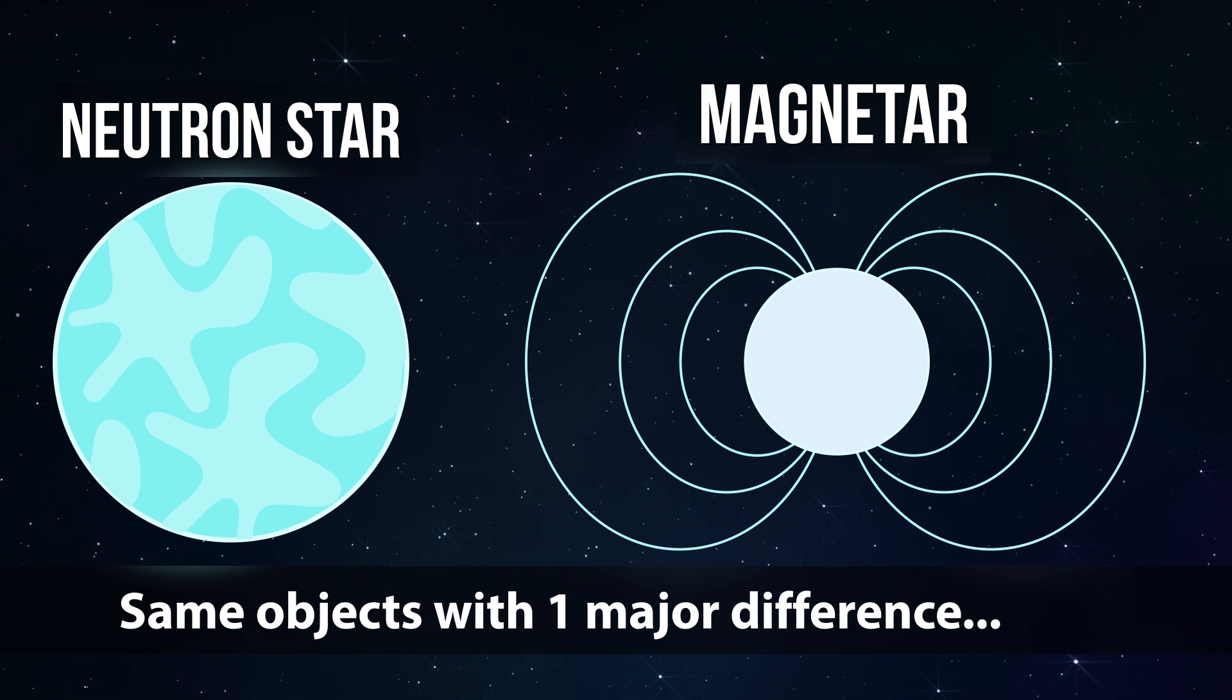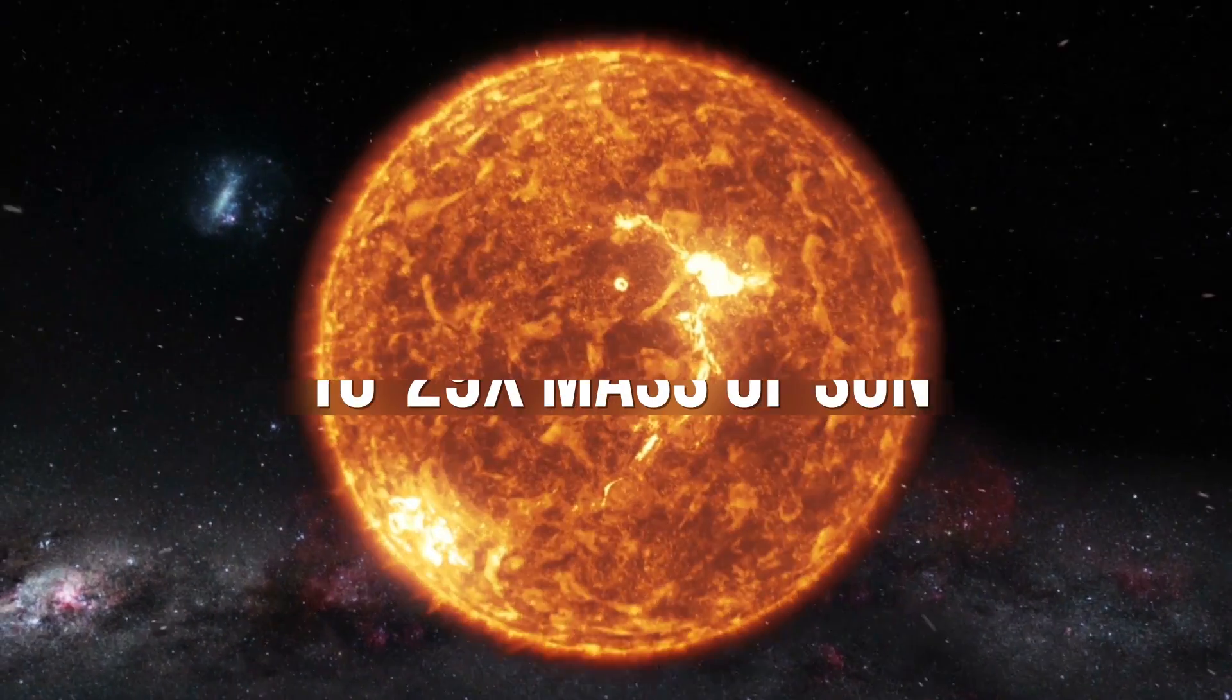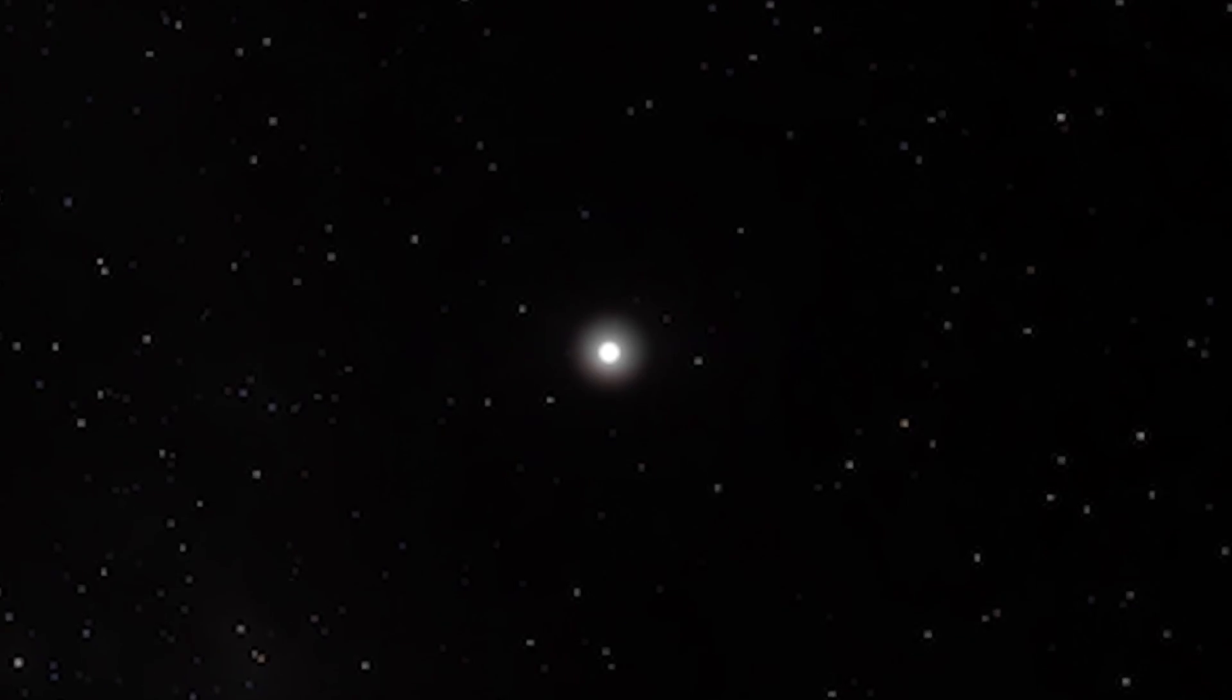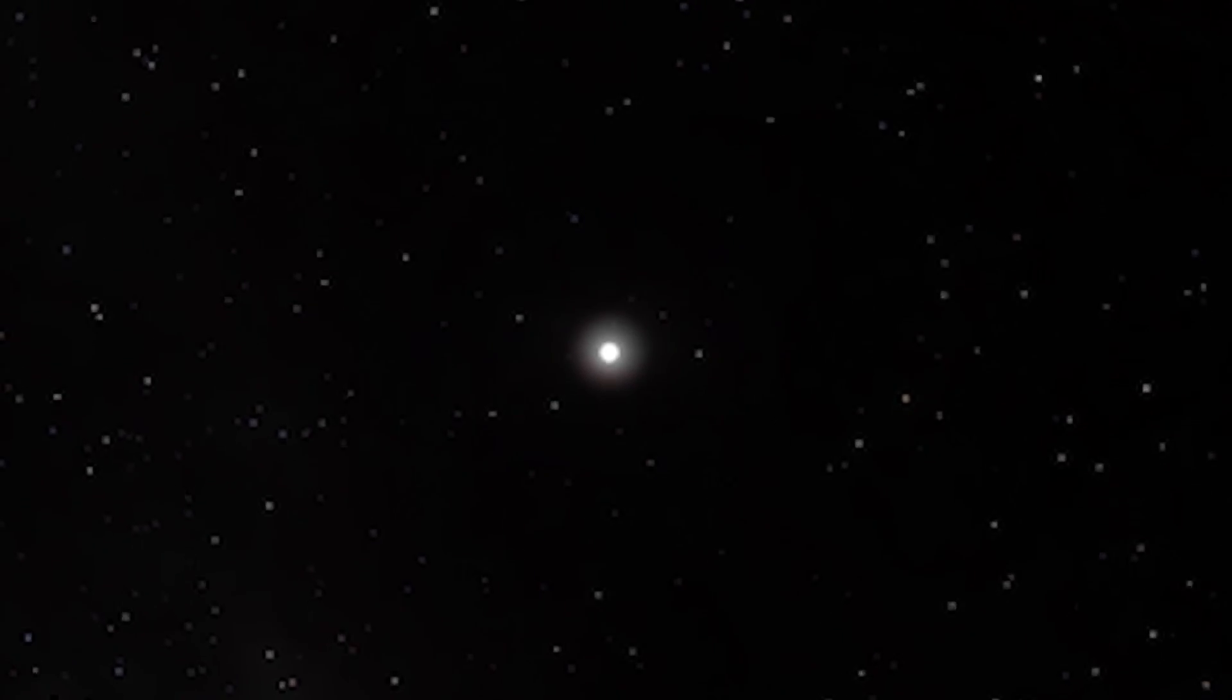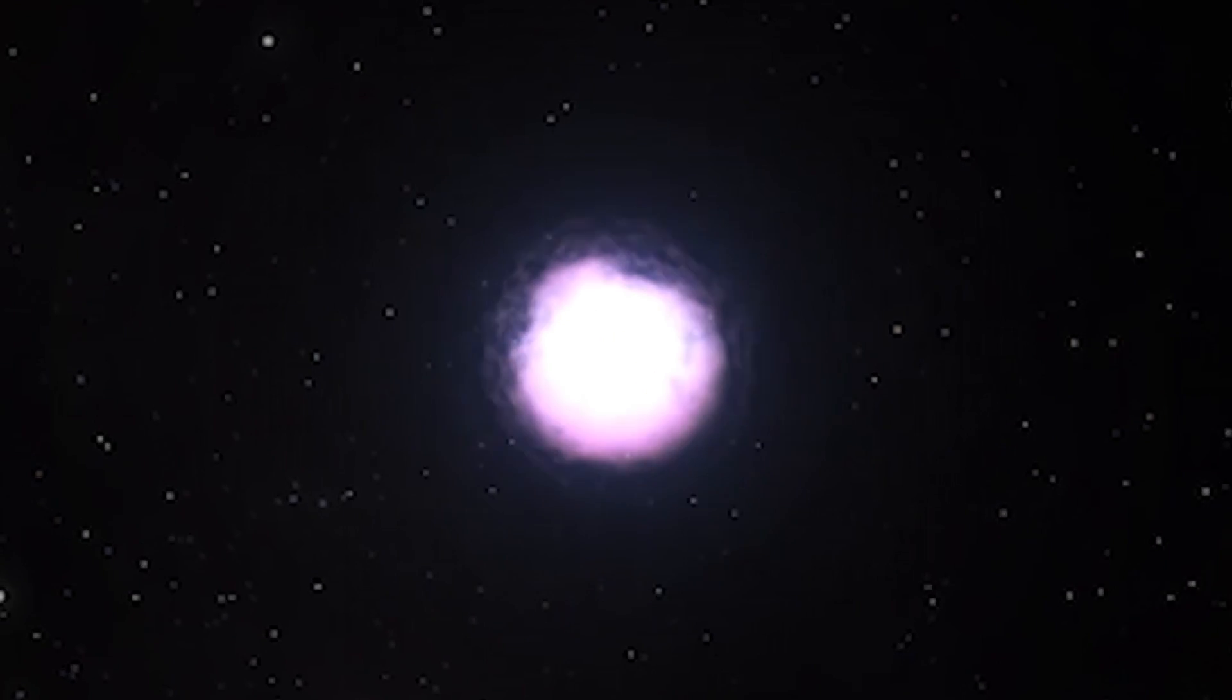First, the basics. Neutron stars and magnetars are the same objects with one major difference, and they're born the same way. From the death of a large star somewhere between 10 and 29 times the mass of our sun. When a star of this enormous size dies after fusion in its core is no longer possible, the result is a brilliant supernova explosion.